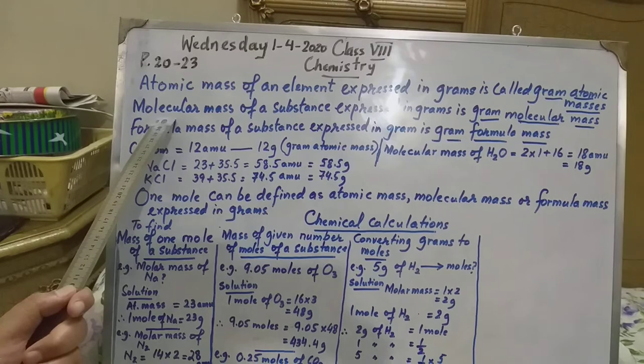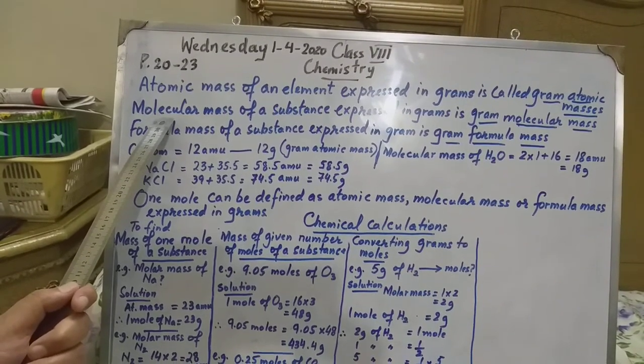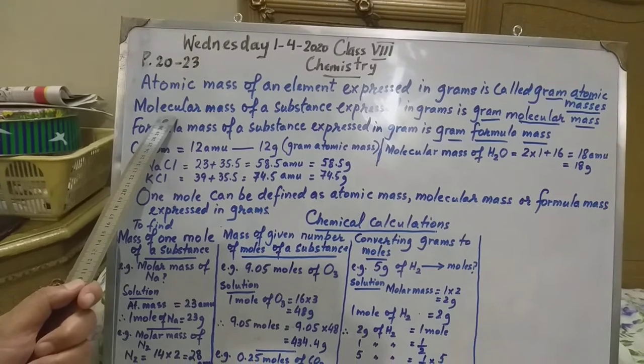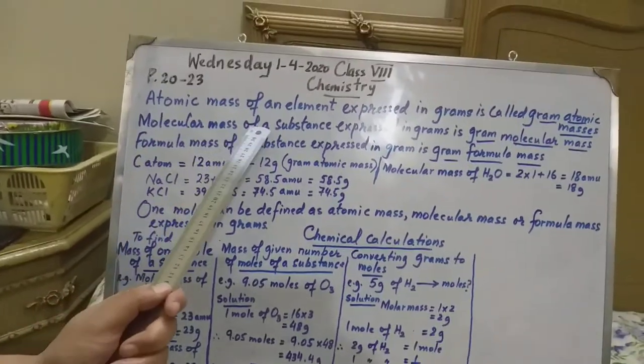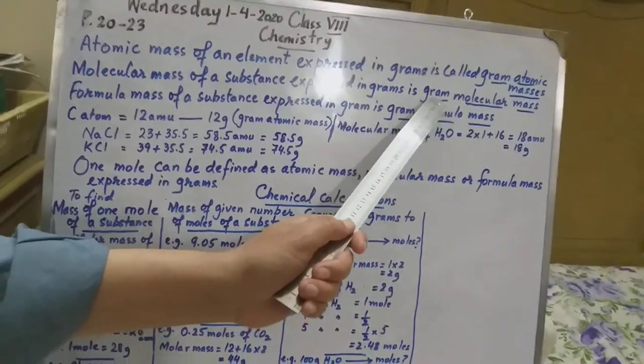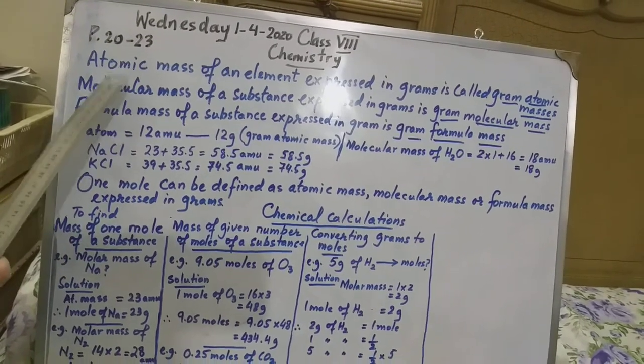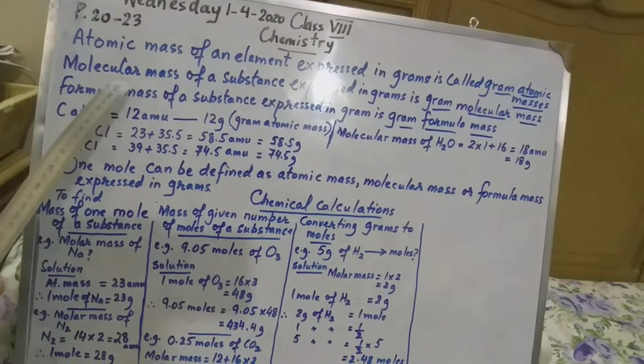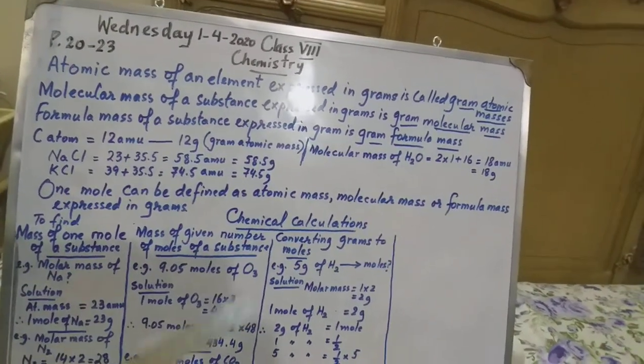Agla dekhen. Kuch compounds hote hain molecule. Kuch elements hote hain molecule ki shakal mein, matlan hydrogen hai, oxygen hai. So, molecular mass of a substance expressed in grams is called gram molecular mass. Dekhen, ab isme farq ye hai na ke yeh atom hai wo molecule hai. Molecule ki shakal mein ho to woh gram molecular mass banta hai.